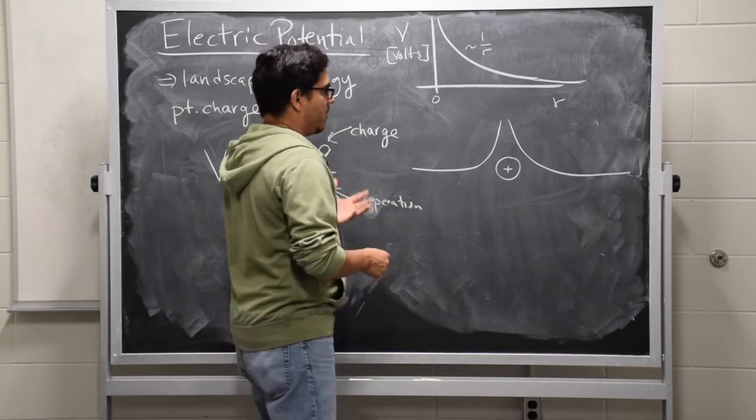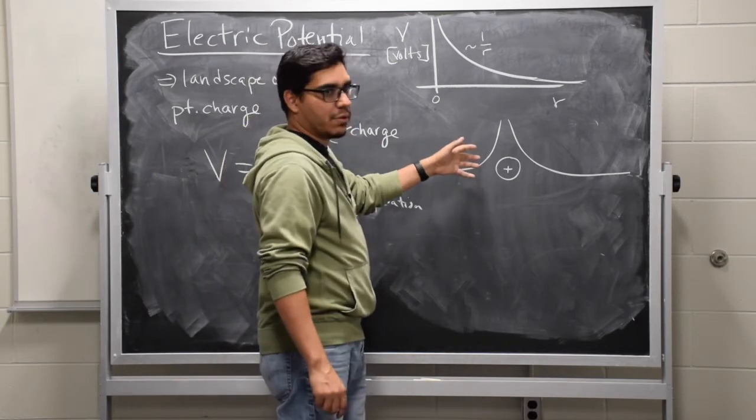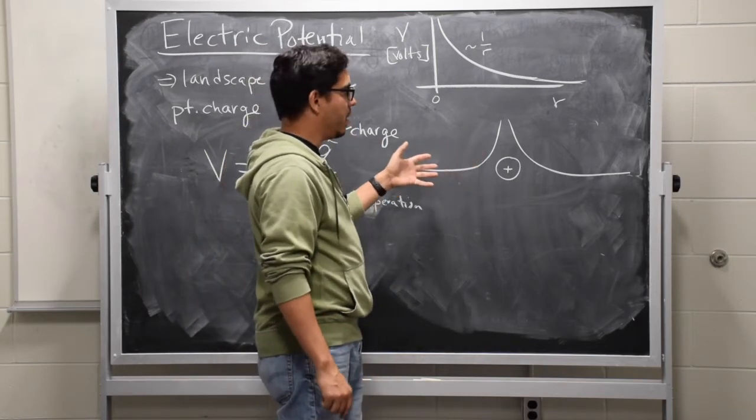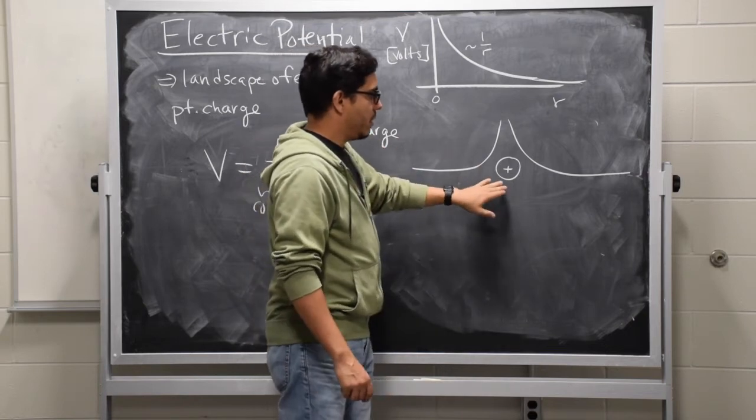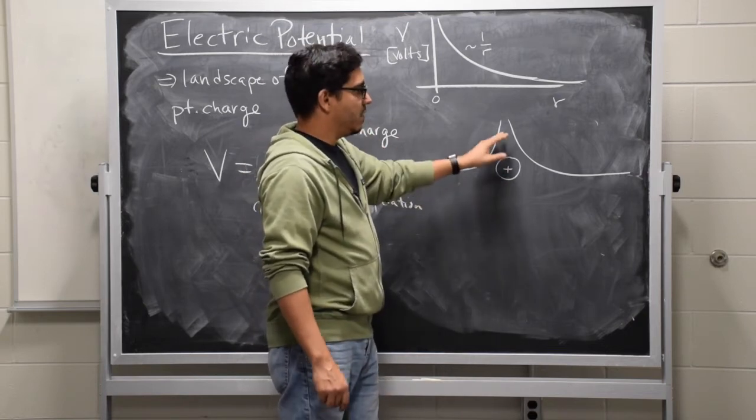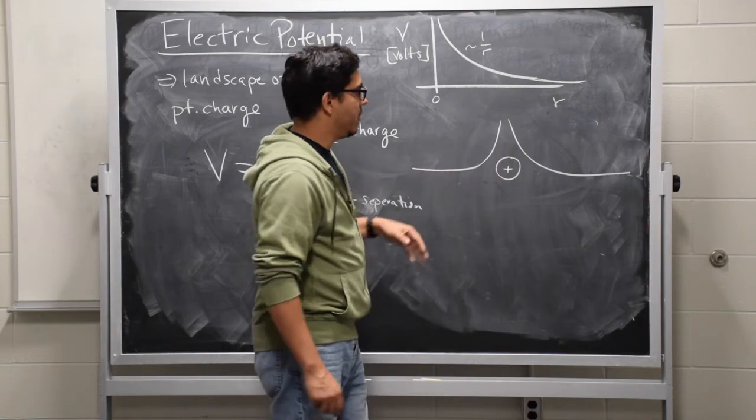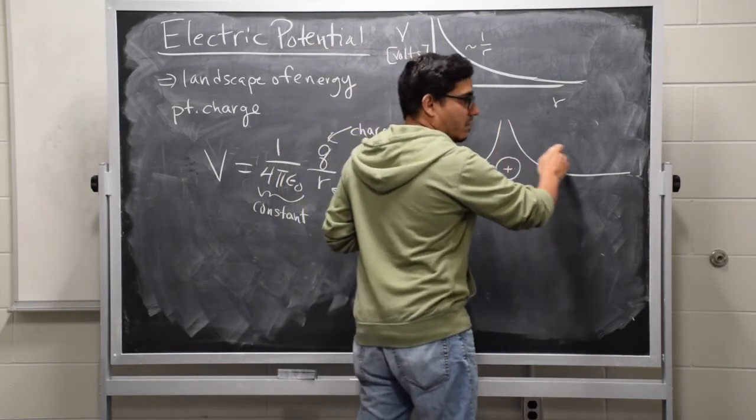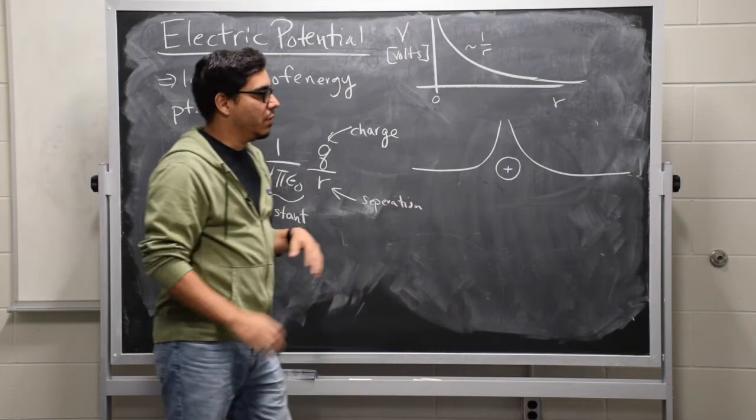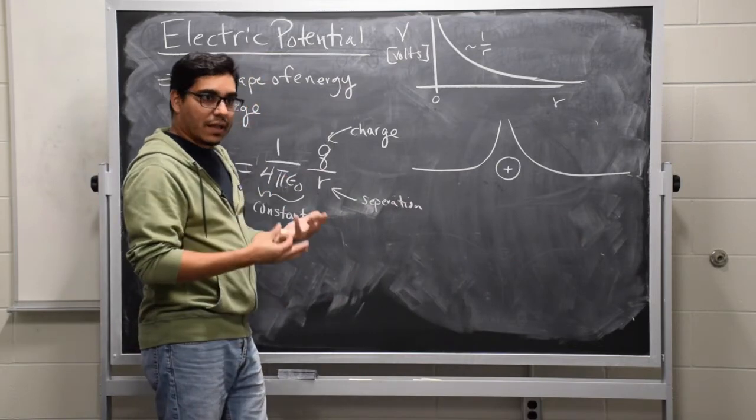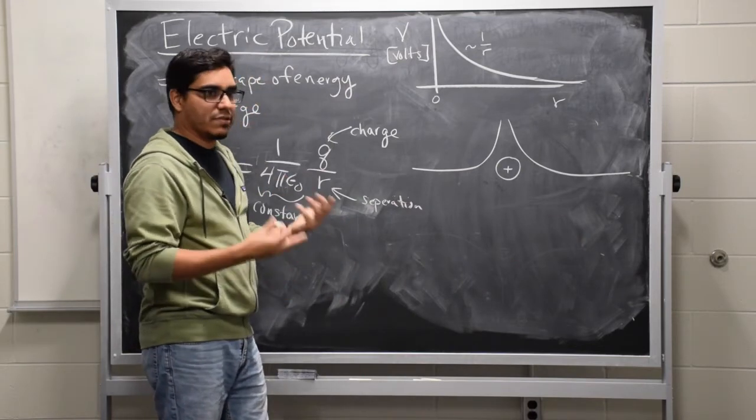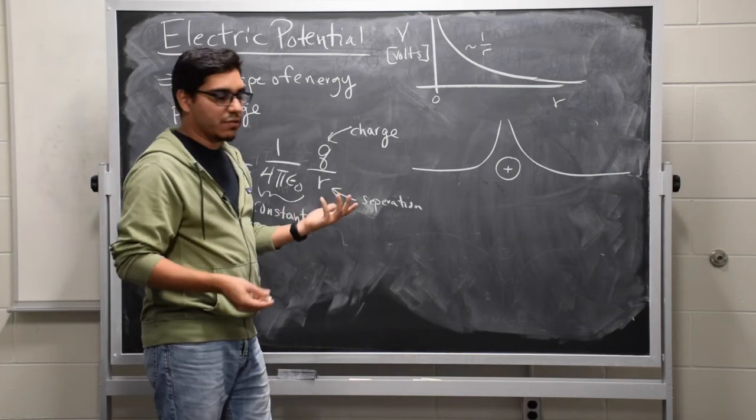The idea being that this tells you a little bit about what would happen if you put another positive charge nearby. Your experience with like charges is that they repel. This gives you a sense of how that might happen. If we were to put a positive charge nearby, it would in a sense roll down this energy hill, if you will. It's not exactly rolling or anything like that, but this gives you a sense of an analogy of how this would work.